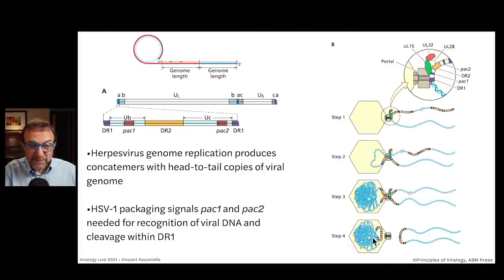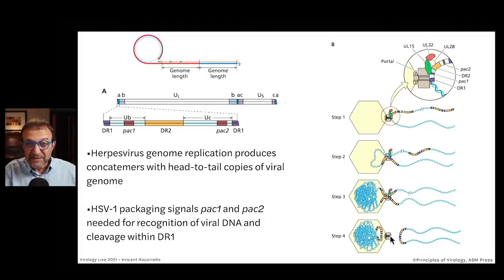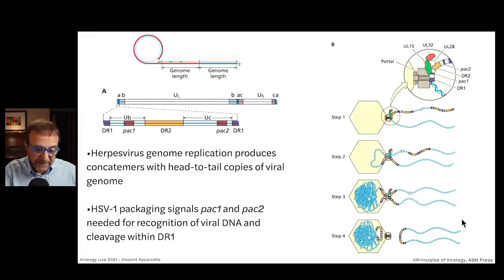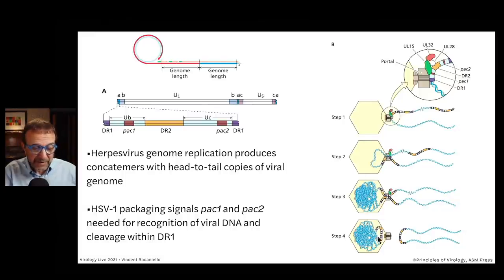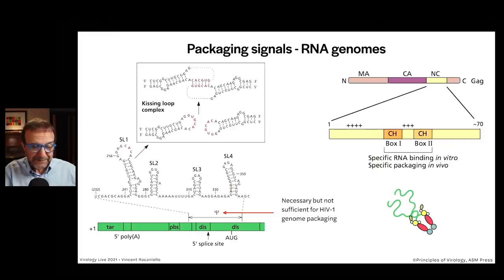This is put in at very high pressure so that when this particle infects the next cell and docks onto the nuclear pore, this DNA comes shooting out into the nucleus. That's how herpes virus DNA is packaged and how we get from a concatemer to a single molecule of DNA in the virus particle.